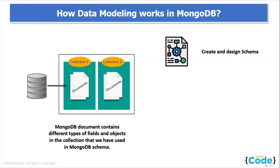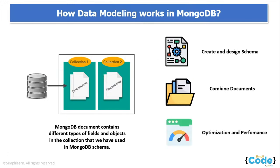The first step is to create and design a schema as per the requirement and the application need. Then we have to combine documents — if there is no scope for multiple documents to be stored into a single one, we need to understand our requirement and combine documents accordingly so that performance and optimization of the database are improved. This flexibility facilitates the mapping of documents to an entity or object. Each document can match the data fields of a represented entity even if the document has substantial variation from other documents in the collection.